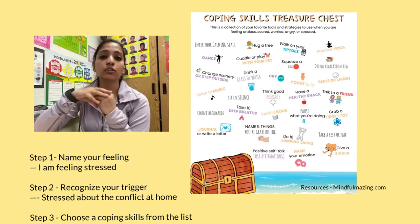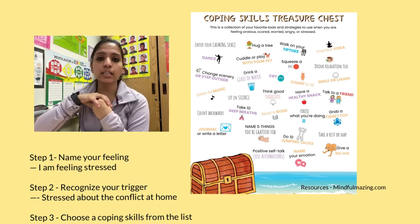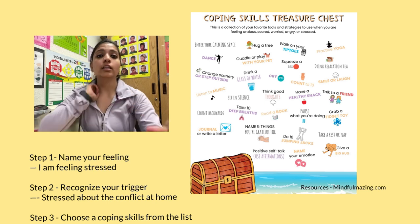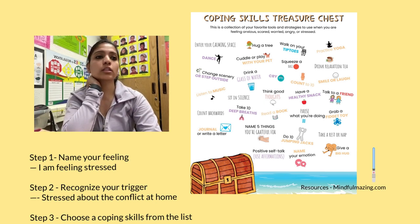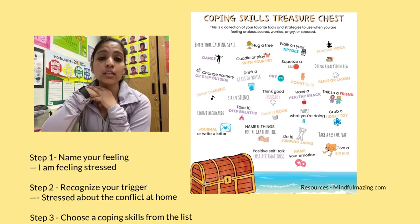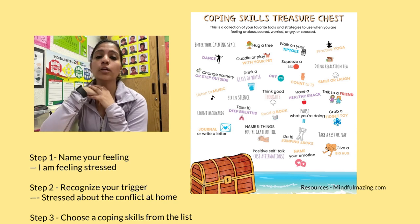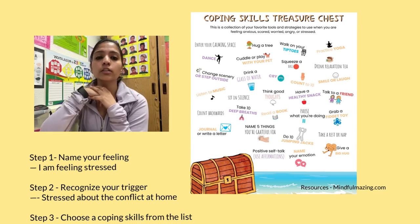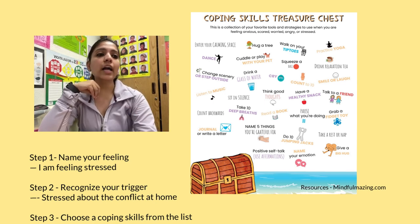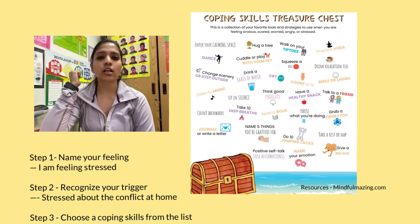Once you recognize your feelings and the reason behind it, the third step is to choose a coping skill. You could choose coping skills from all these options. My favorite one is to do deep breathing when I feel anxious, or to drink a lot of water. Those two things really help me calm down. And if I'm still stressed or anxious, I try to use positive self-talk.